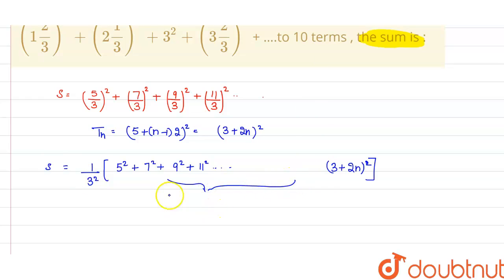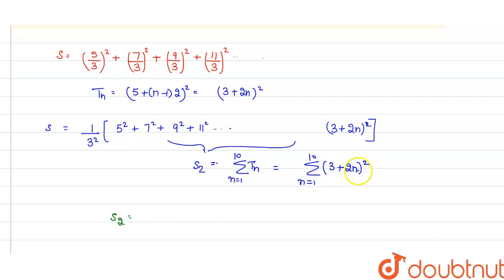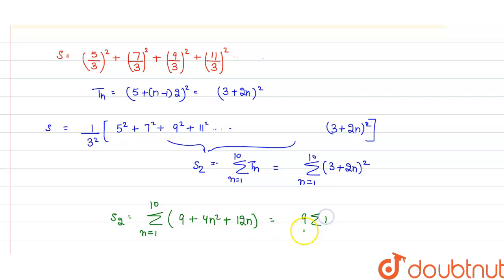Let me call this series S, and define a helper series S₂. S₂ is equal to the summation of Tₙ from n = 1 up to 10, where Tₙ = (3 + 2n) whole squared. Expanding this: (3 + 2n)² = 9 + 4n² + 12n. So S₂ equals the summation of 9 + 4n² + 12n from n = 1 to 10.